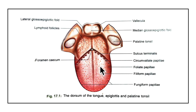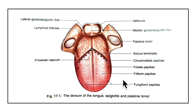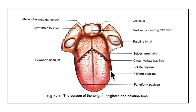Papillae are projections of mucous membrane or corium which give the anterior two-thirds of the tongue its characteristic roughness. The first type is the vallate or circumvallate papillae. They are large, about one to two millimeters in diameter, eight to twelve in number, and situated immediately in front of the sulcus terminalis. Each papilla is a cylindrical projection surrounded by a circular sulcus, and the walls have taste buds. The second type is the fungiform papillae, which are numerous near the tip and margins. Third is the filiform papillae, covering the pre-sulcal area and giving a velvety appearance. Finally, foliate papillae are present at the lateral border just in front of the circumvallate papillae and are leaf-shaped.